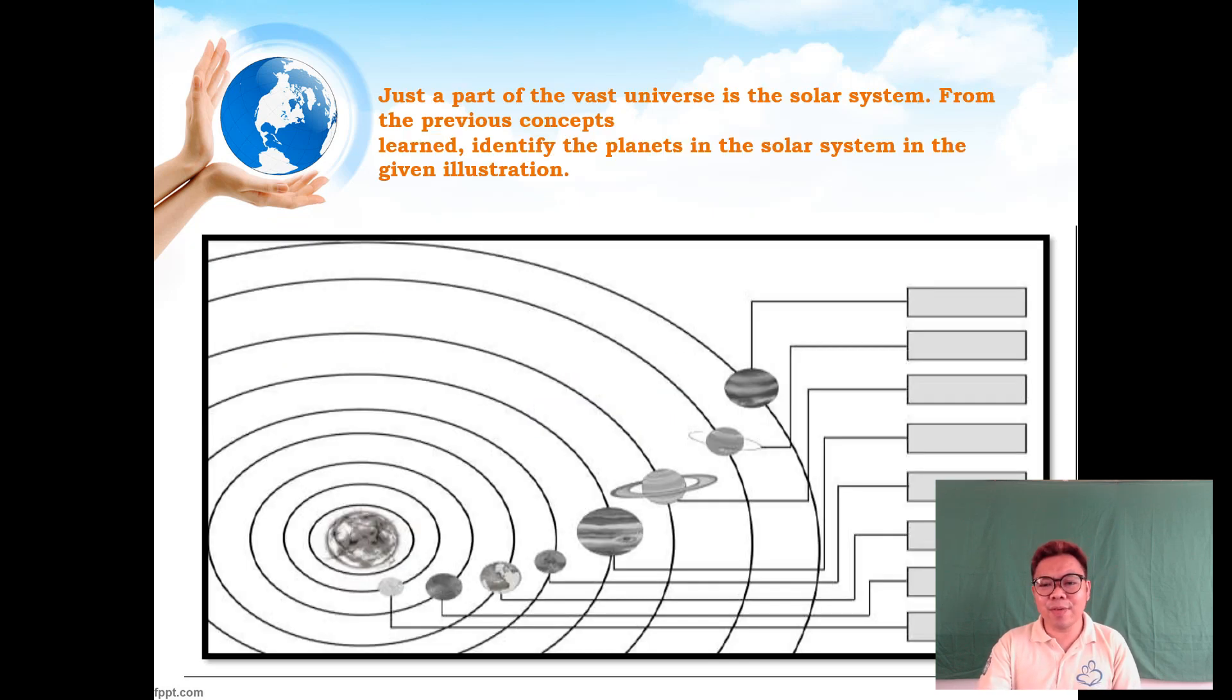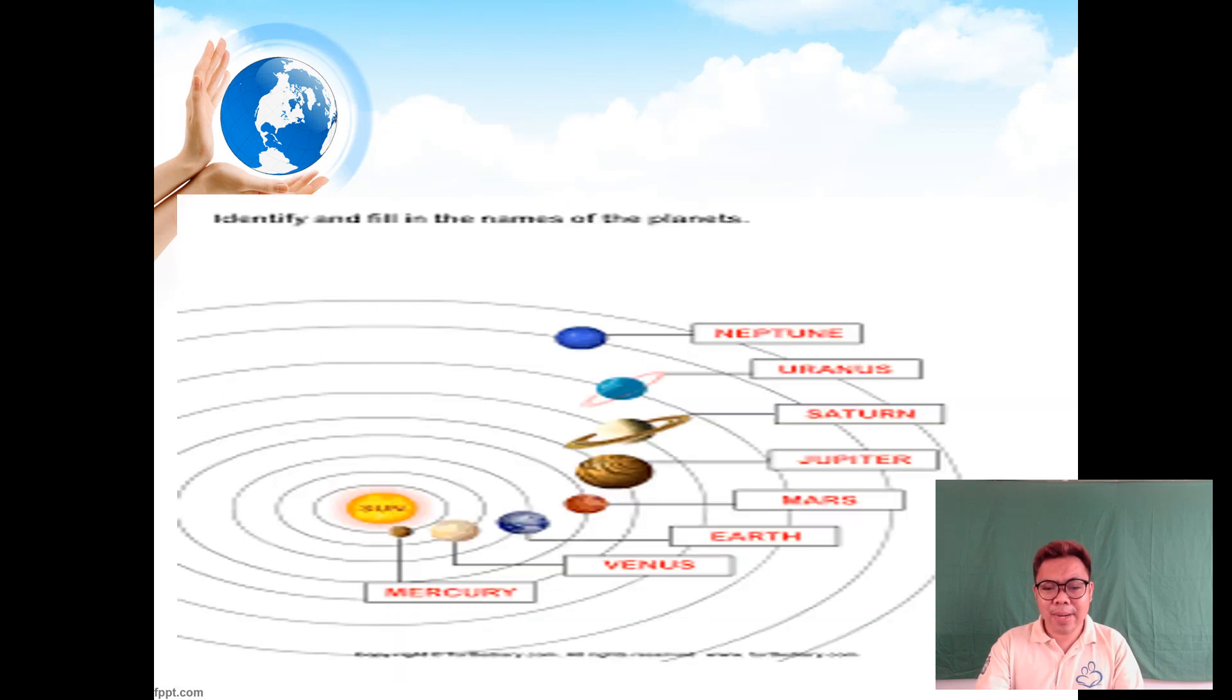Just a part of the vast universe is the solar system. From the previous concepts from junior high school, we can identify the planets in the solar system. From the sun we have Mercury, Venus, Earth, Mars, Jupiter, Saturn, Uranus, and Neptune. The sun is the center of the solar system.